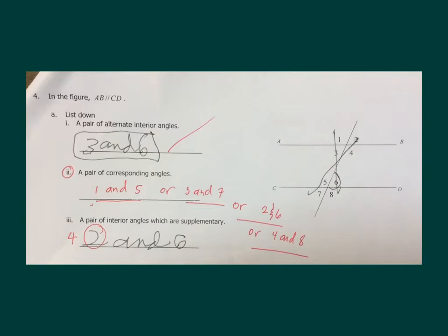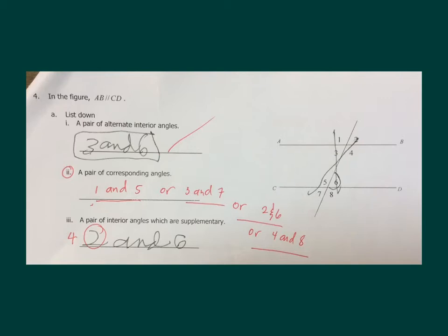The corresponding angle of 1 is 5 — they have the same measure. If you look at the diagram, you can see they are drawn the same way: 1 is an obtuse angle and 5 is also an obtuse angle. Another example is 3 and 7. On the other side, you can have 2 and 6, and then 4 and 8. The main idea is they're on the same side and they have the same measure — that's why they are called corresponding angles.